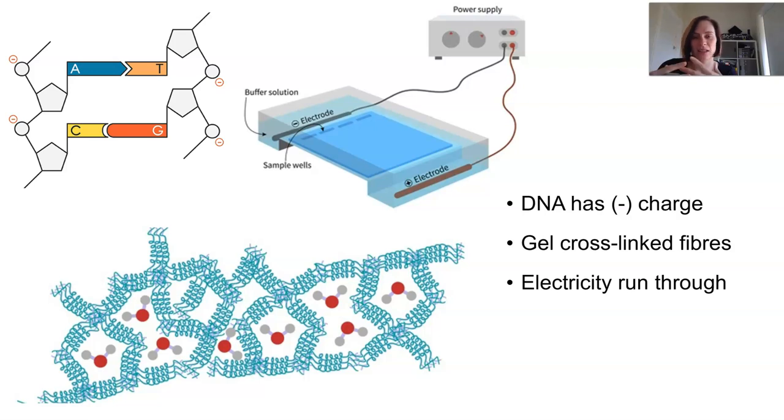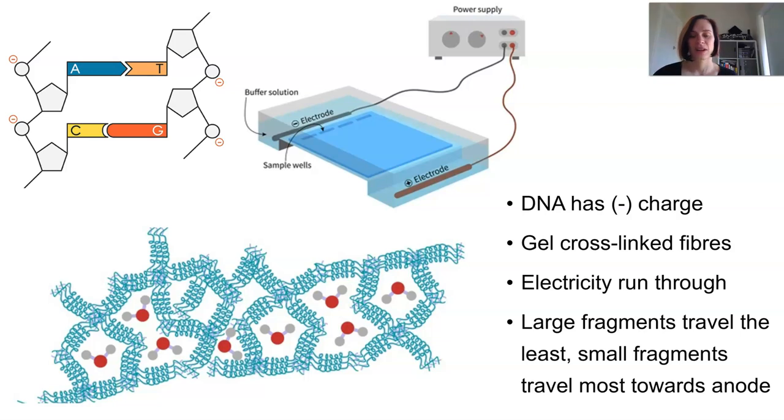And the gel acts as like a little sponge. And it's a medium where all the fragments of DNA can move through it and separate out as they move through towards the positive anode. And the larger fragments meet resistance in the gel. They're too big to move through it easily, so they travel the least. The smaller fragments meet very little resistance and they travel the furthest towards the anode.